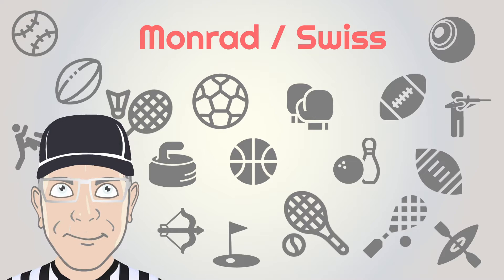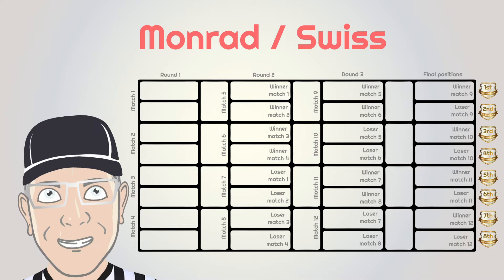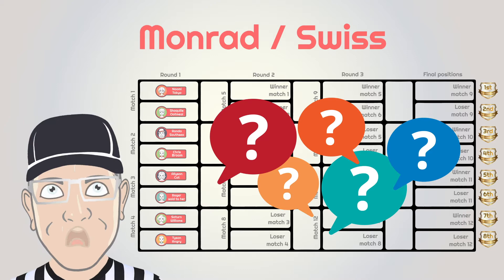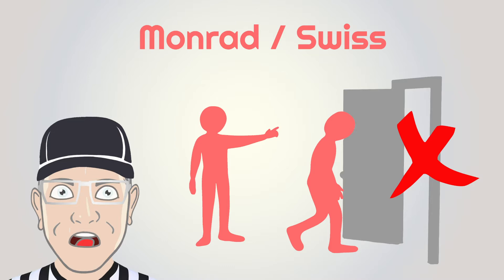Unlike leagues or other competition formats where all pairings are known from the beginning, in a Swiss system the match pairing for each round is only completed after the previous round has finalized — the second round is completely dependent on the first round results. The Swiss system is used for competitions with too many entrants for a full round robin, and where eliminating competitors before the end of the tournament is undesirable.